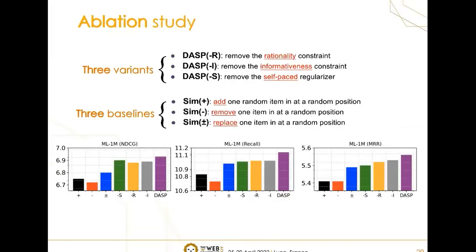In order to study the contributions of the three components for the final performance, we compare our framework with its three variants, and each variant removes one component. We also compare our models with three straightforward baselines, where we generate new samples by adding, removing, and replacing one item at a random position of the original sequences.